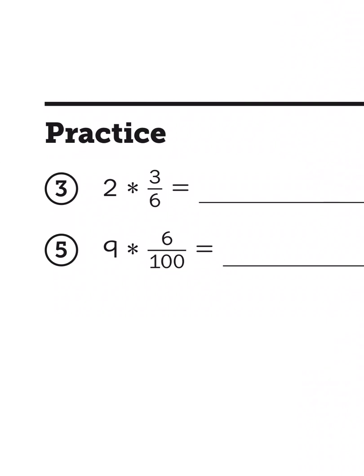Let's take a look at number five. If I multiply nine and six-hundredths, I'm counting how many hundredths I have — it's kind of like counting pennies. If I had nine groups of pennies and there were six pennies in each group, how many pennies do I have total? Well, nine times six is fifty-four, so that gives me fifty-four hundredths, or fifty-four pennies.